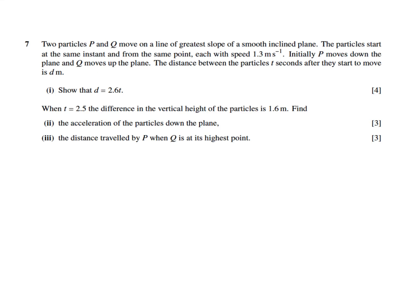Two particles P and Q move on the line of greatest slope of a smooth inclined plane. The particles start at the same instant and from the same point, each with a speed of 1.3 metres per second. Initially P moves down the plane and Q moves up the plane. The distance between the particles T seconds after they start to move is D metres, such that D equals 2.6T.